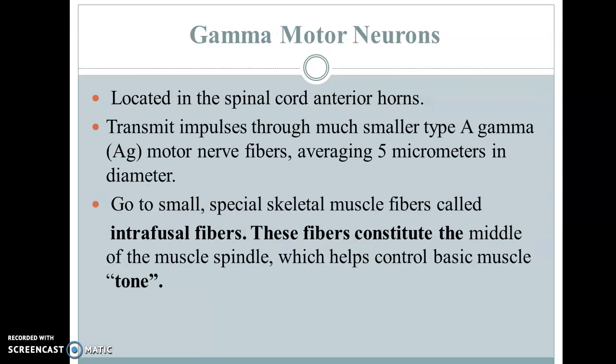The smaller fibers are type A gamma fibers, with an average diameter of around 5 micrometers. They innervate small special skeletal muscle fibers called intrafusal fibers, which are present in the muscle spindle — the sensory receptor present in the muscle. The function of the muscle spindle is to control basic muscle tone. Tone is the basal state of contraction, meaning at rest every skeletal muscle maintains a basal state of contraction, regulated by the muscle spindle innervated by gamma fibers.